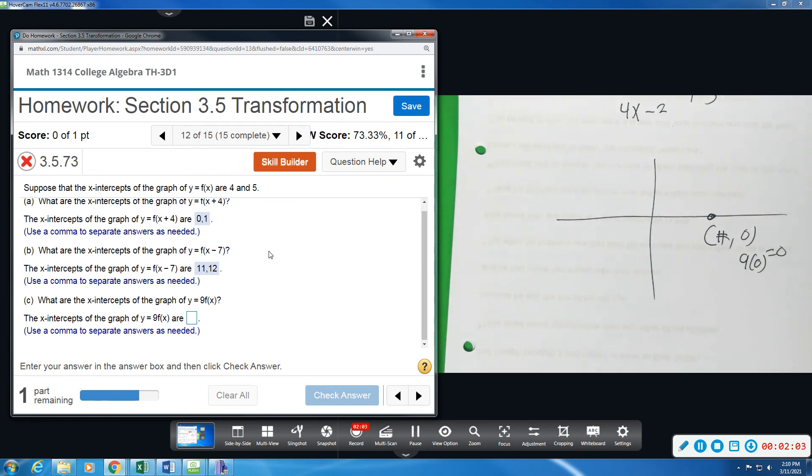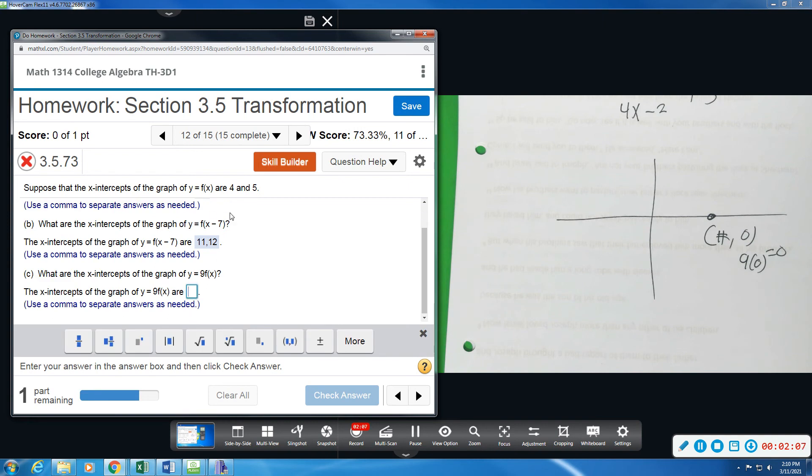So in this instance, our x-intercepts are unchanged. They're unaffected by the multiplication of 9 by the y-value. So we would still have x-intercepts of 4 and 5.